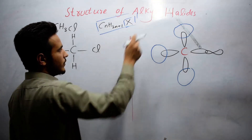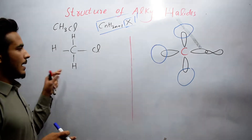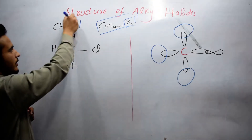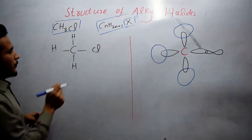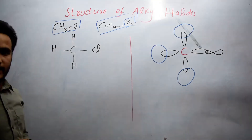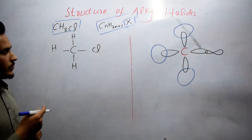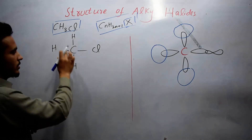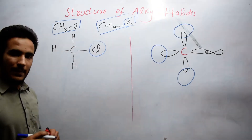Let's take the first member of alkyl halides, which is methyl chloride — CH3Cl. You can see carbon bonded to three hydrogens and one chlorine in its general structure.